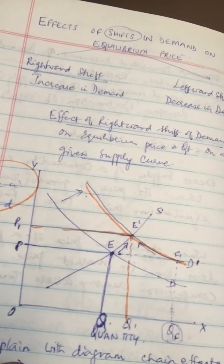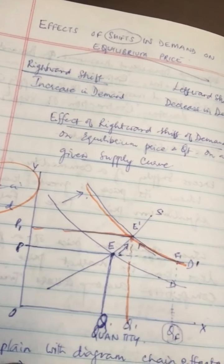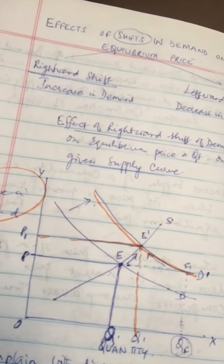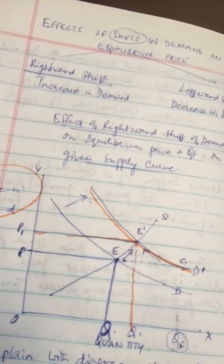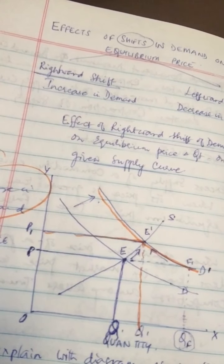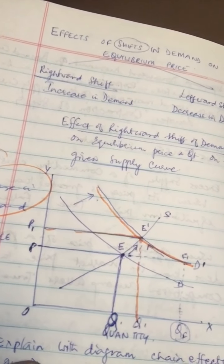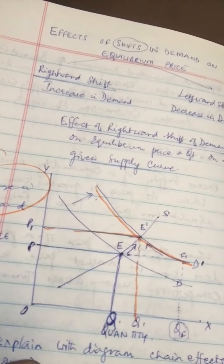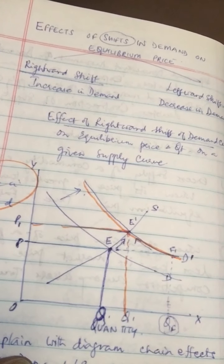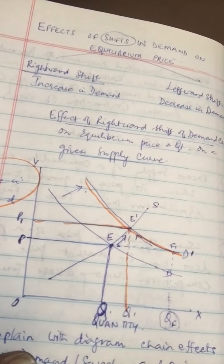Since consumers will not be able to buy all they want at price OP, there will be competition among buyers leading to a rise in price. At F1 the suppliers are not ready to supply that much, so as price rises, demand starts falling from D1D1 and supply starts rising along the supply curve, as shown by the arrows. This change will continue till demand and supply are equal at E1.